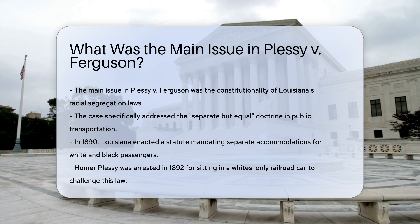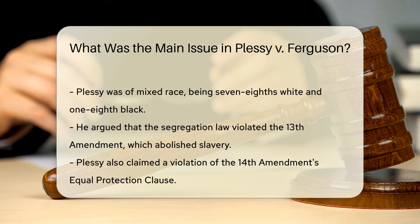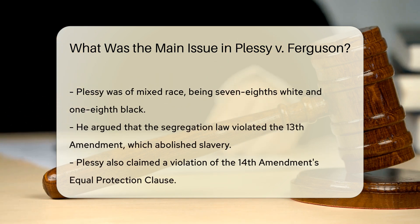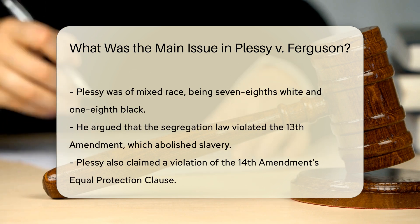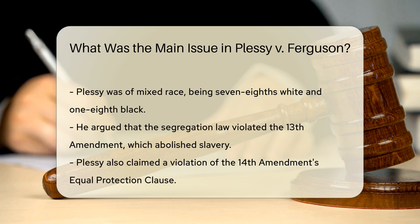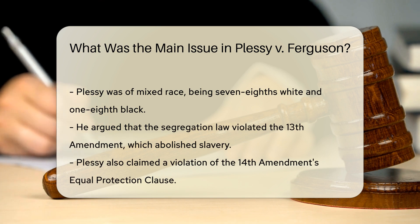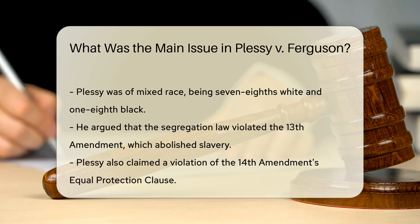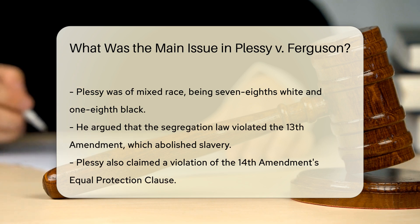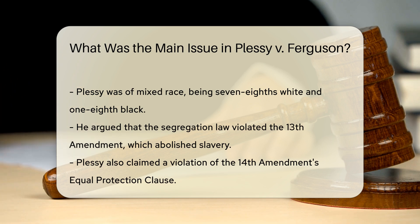Plessy, who was seven-eighths white and one-eighth black, intentionally sat in a white-zoned car to challenge the law. Plessy argued that the segregation law violated the 13th Amendment, which abolished slavery, and the 14th Amendment's Equal Protection Clause, which guarantees equal protection under the law for all citizens. He contended that the law stamped African Americans with a badge of inferiority and thus violated the Constitution.